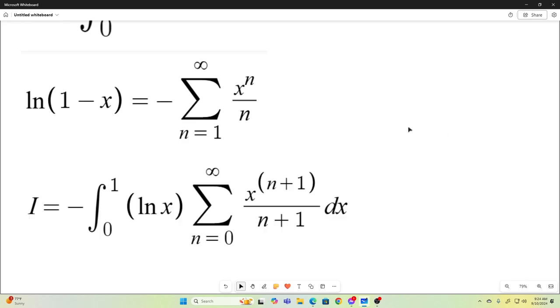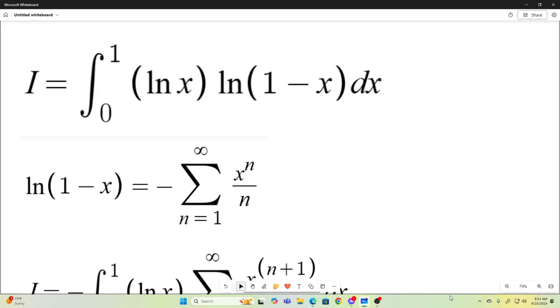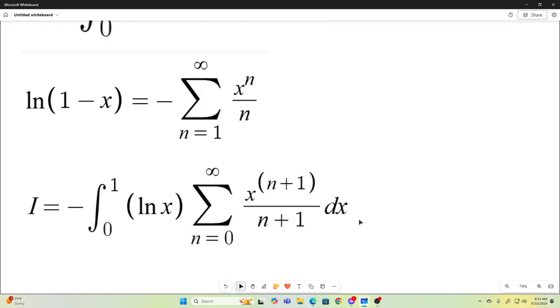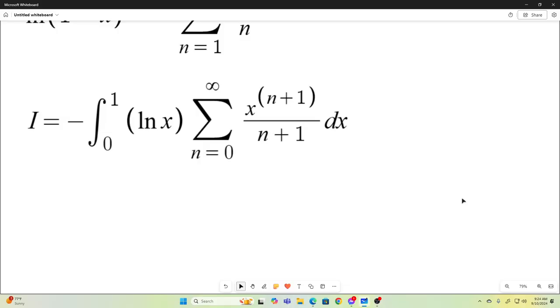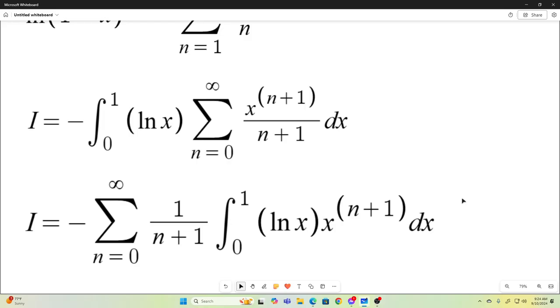And then we're going to replace that natural log 1 minus x in our original integral with that sum giving us the following. Now we just have this. And then we will switch the integral and sum signs and factor out the 1 over n plus 1 giving us this.